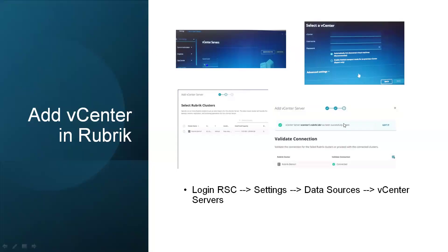Once we click Next, we will get the Rubrik clusters which are added in the RSC. Select the Rubrik cluster to which we want to integrate the vCenter, then click Next. We will get an option to validate the connection. If the connection is good, we are good to integrate. Click Add and the vCenter will be added and refreshed.